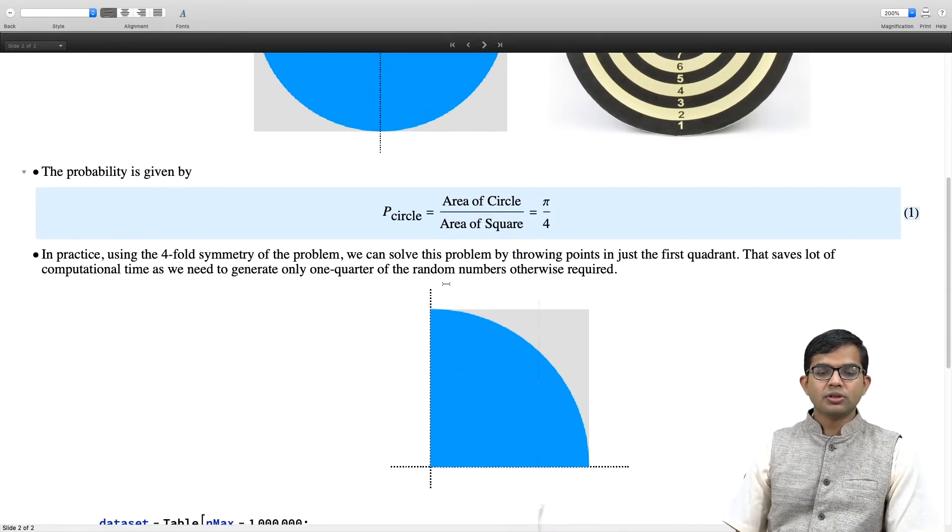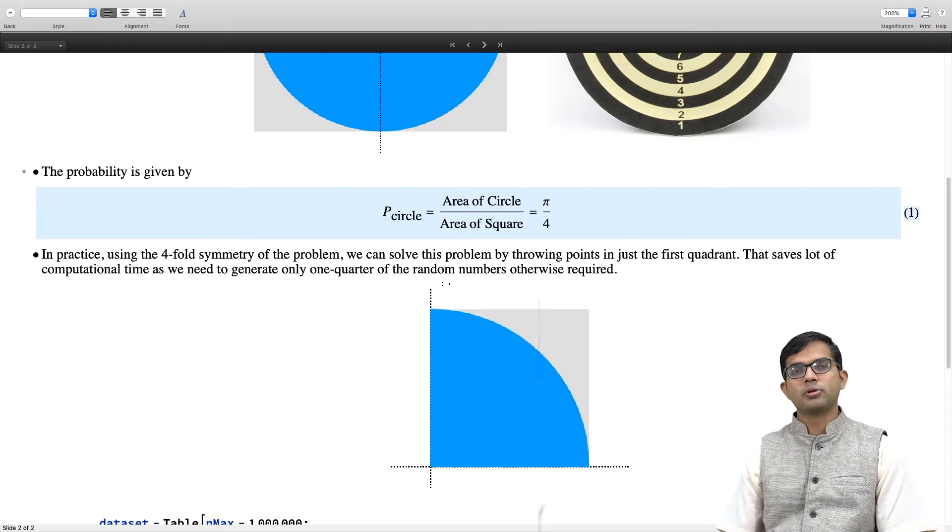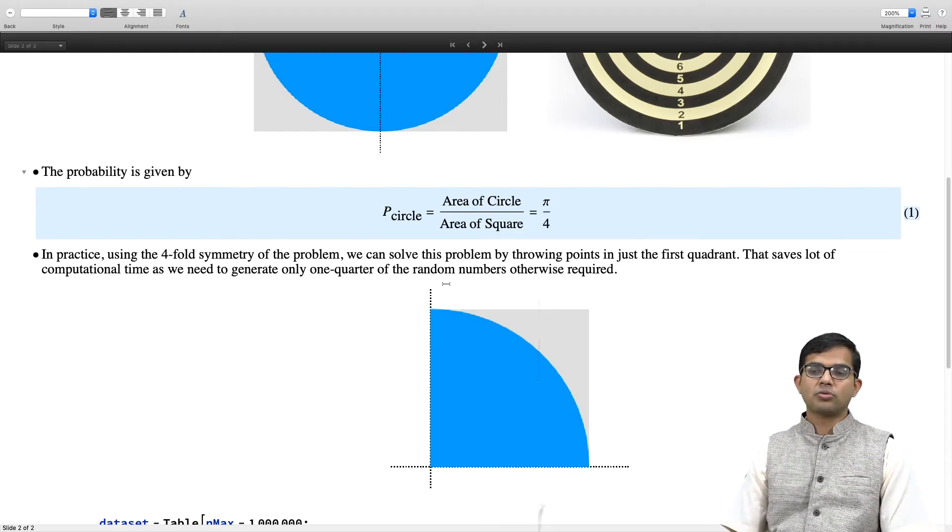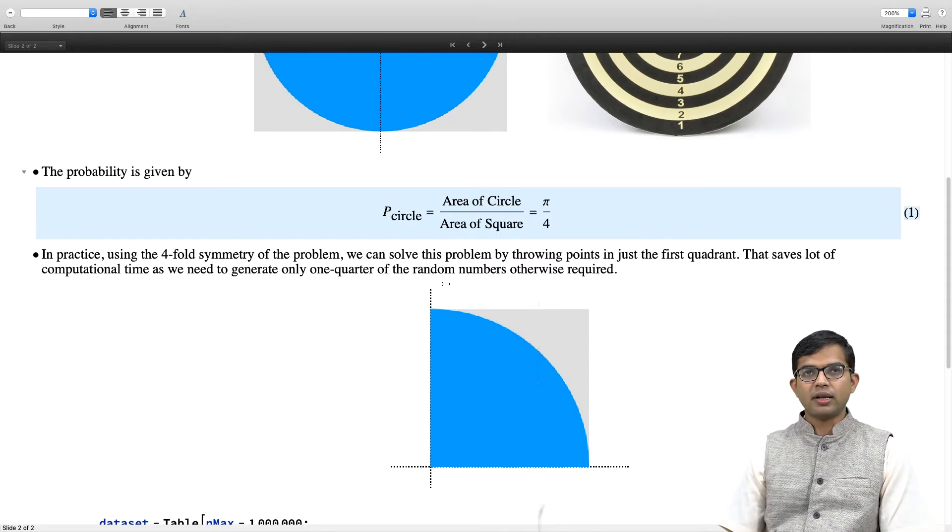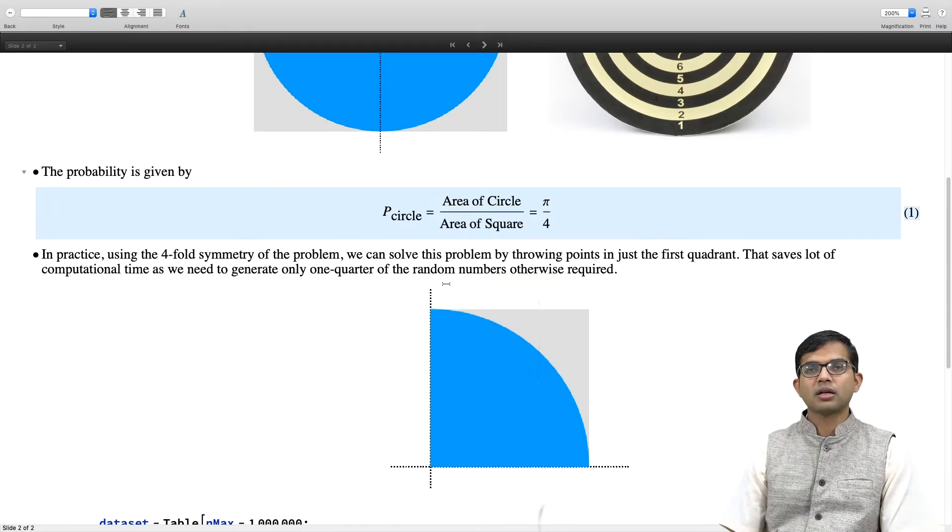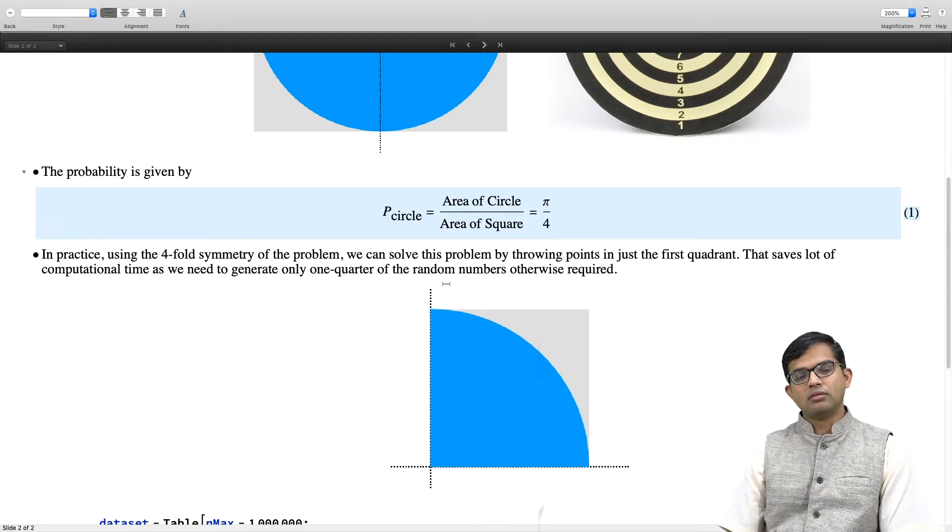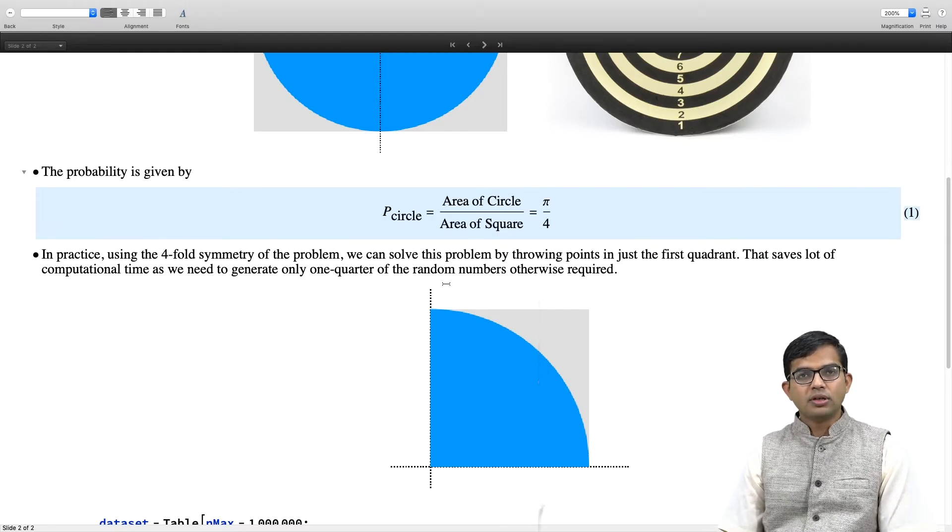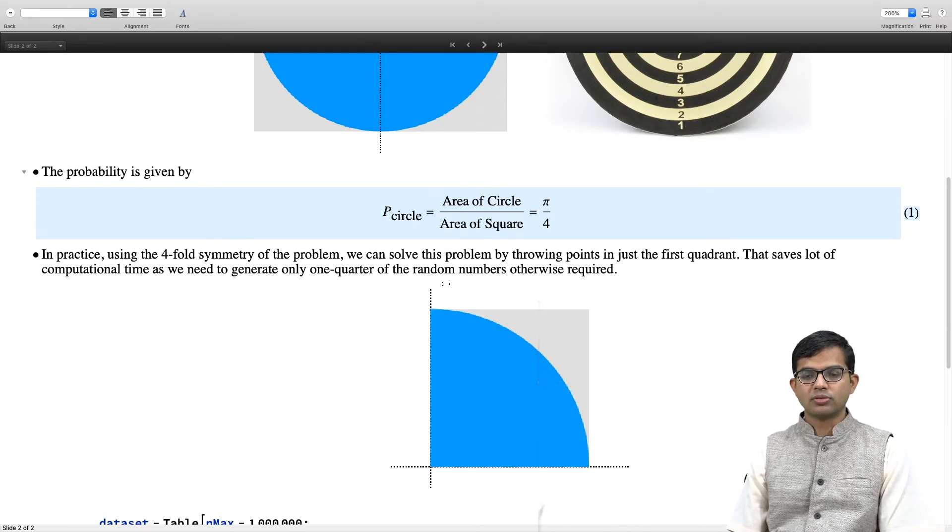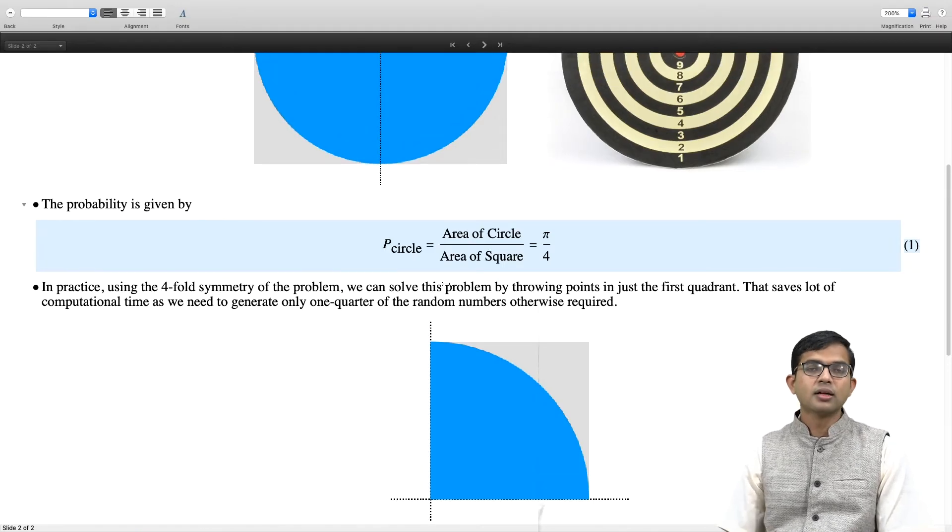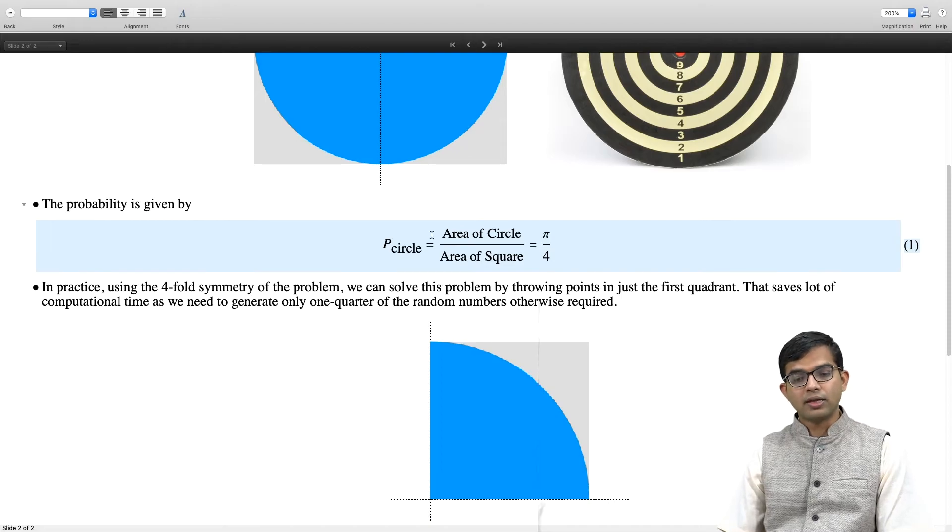In practice, using the 4-fold symmetry of the problem, we can actually solve this problem by considering just the first quadrant. What we are planning to do is of course do this computationally. It is just impractical to actually drop so many pins, Buffon experiments type. But we have a random number generator - we have Mathematica and we can use this to generate lots of random numbers as long as they are drawn from a uniform distribution in the appropriate manner.